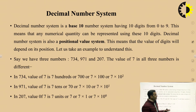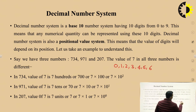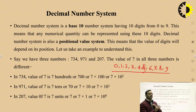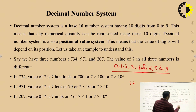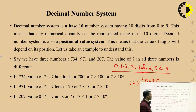In the decimal number system, the base is 10 and there are 10 digits: 0, 1, 2, 3, 4, 5, 6, 7, 8, and 9. You can take any number and you will not find an eleventh digit. The decimal number system is a positional value system, meaning every digit has its positional weight.